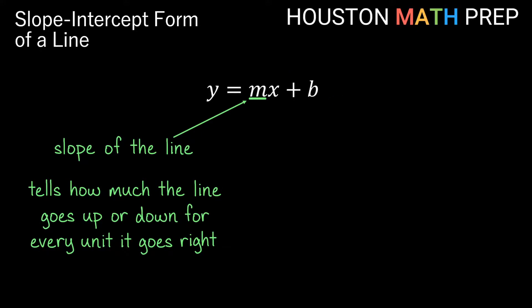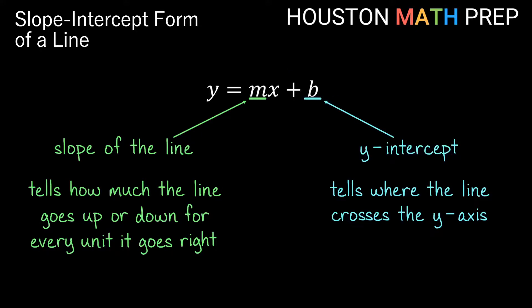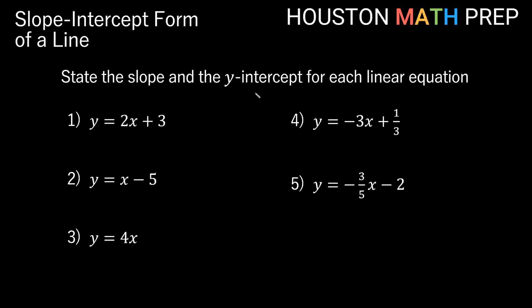Our b at the end of the equation is the y-intercept. The y-intercept just tells us where the line crosses the y-axis. We'll go over several examples finding the slope and the y-intercept for each of these linear equations.